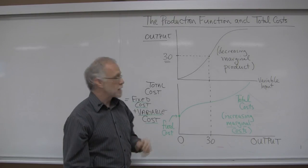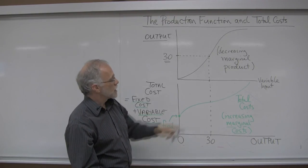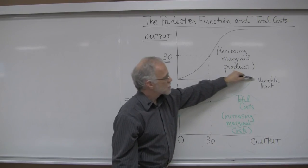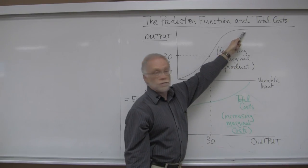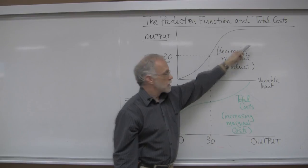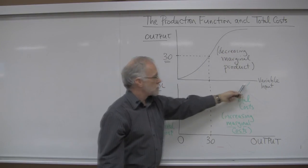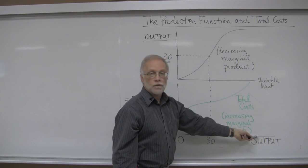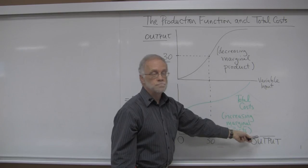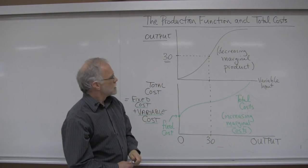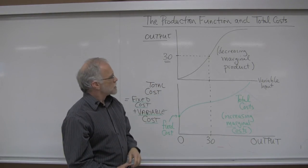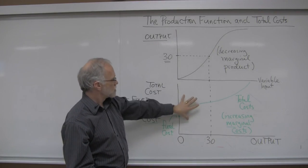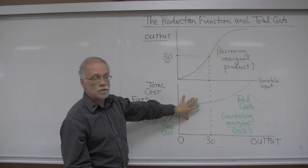In the most extreme case, we could add some variable input and get no extra output at all. That would simply increase our costs without increasing our output. This is the relationship between the production function and total costs.